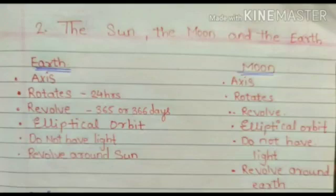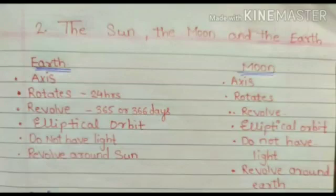Let's recap. In the previous chapter we learned about the earth. The earth has its own axis and it rotates on that axis. Its rotation takes 24 hours and its revolution takes 365 or 366 days. The orbit of the earth is elliptical — it revolves around the sun. The sun does not go anywhere; the sun has a fixed place and the earth revolves around the sun on its elliptical orbit.